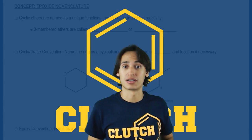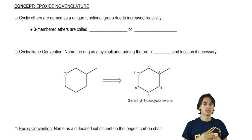All right, guys. Now let's talk about naming epoxides. It turns out that epoxides are just cyclic ethers. That's basically the definition.